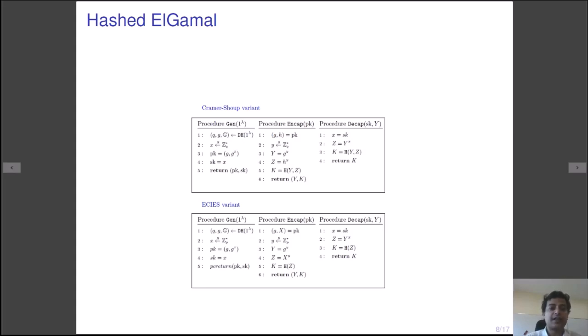The encapsulation algorithm takes g and g to the power x, samples random y from ZQ star and computes g to the power y and g to the power xy. It then derives the key K by hashing g to the power y and g to the power xy, outputting that as the key. The decapsulation algorithm takes the ciphertext Y with the secret key x. It computes Y to the power x and derives the key by h of Y and Y to the power x.